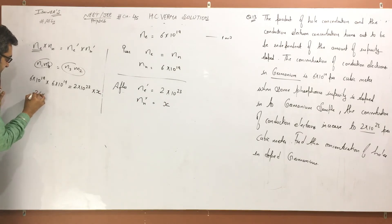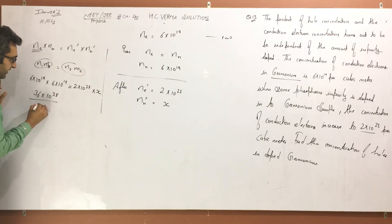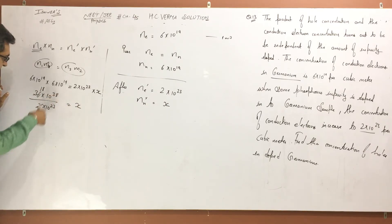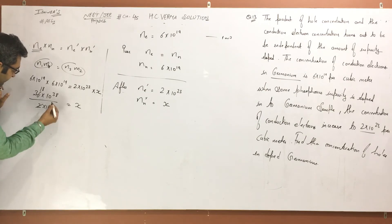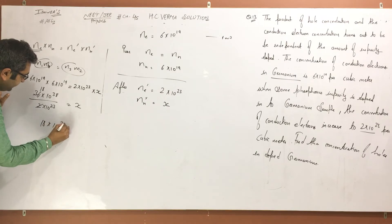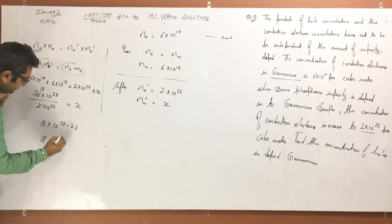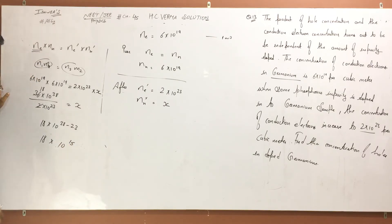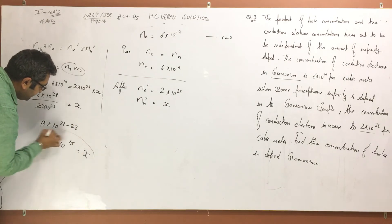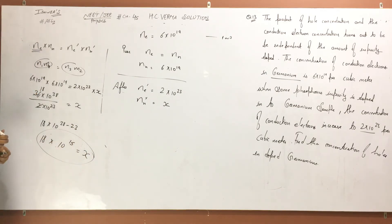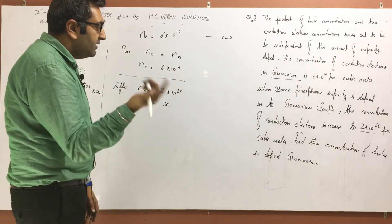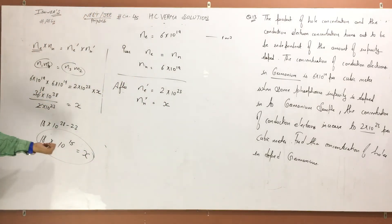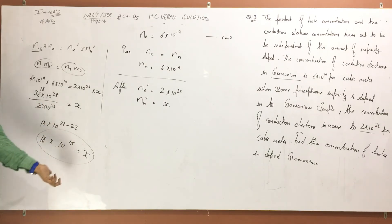So: 6×10¹⁹ × 6×10¹⁹ = 2×10²³ × x. That gives 36×10³⁸ divided by 2×10²³ equals x, which is 18×10¹⁵, or 1.8×10¹⁶ per cubic meter. So that is the answer to the question.